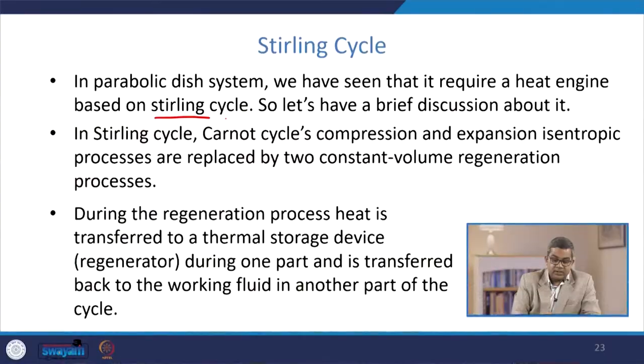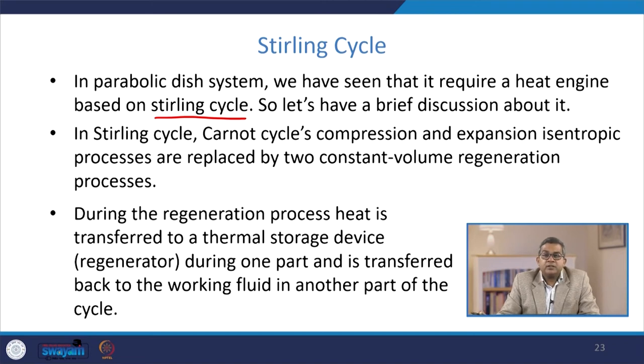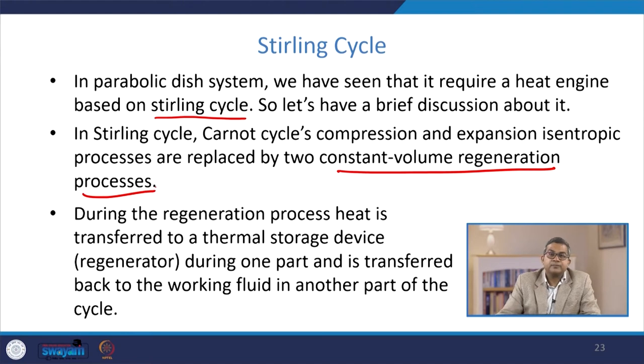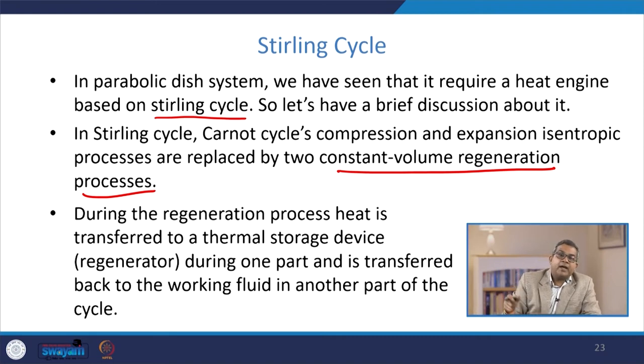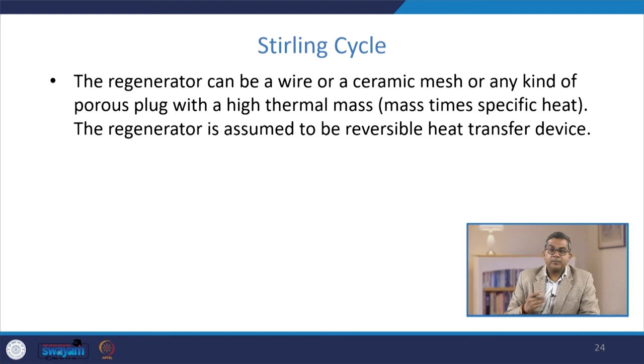Now let us take the Stirling cycle, which we had already discussed in the context of solar energy systems. In a parabolic dish system, a heat engine based on the Stirling cycle is required. In the Stirling cycle, the Carnot cycle's isentropic compression and expansion processes are replaced by two constant-volume regeneration processes. During the regeneration process, heat is transferred to a thermal storage device called the regenerator during one part of the cycle, and transferred back to the working fluid in another part. The regenerator can be a wire mesh, ceramic mesh, or any porous plug with high thermal mass, and is assumed to be a reversible heat transfer device.